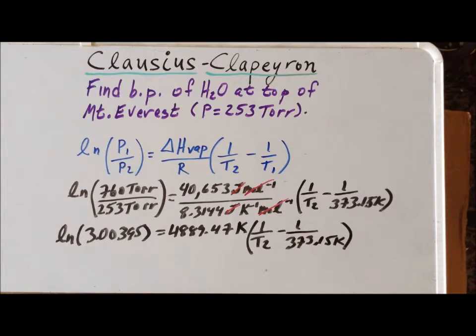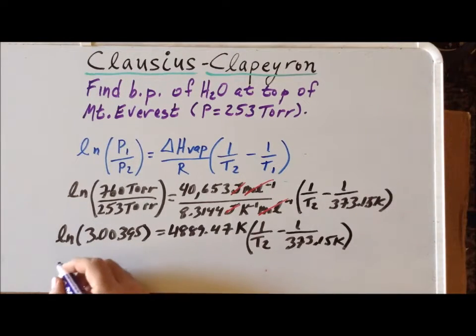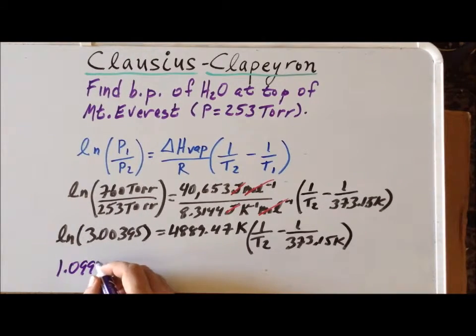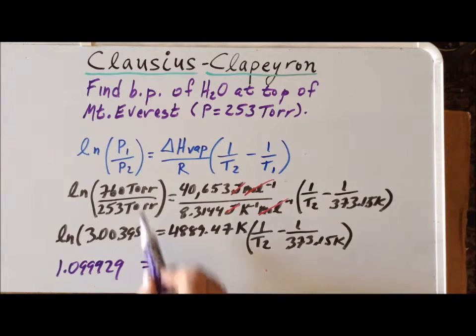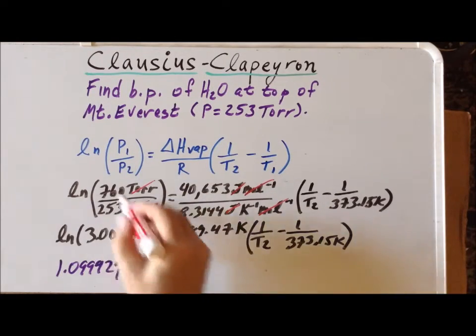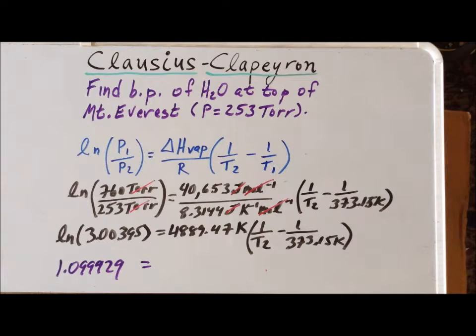Now we can solve on the left-hand side and evaluate the natural log, and that becomes 1.099929. One thing to notice is that whenever you take the natural log of an expression, the expression must be unitless. So that's why it's important that we use the exact same unit for the pressure here so that the units will cancel and we get a unitless number before we try to take the natural log.